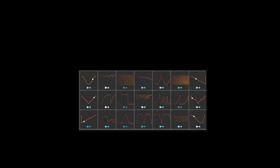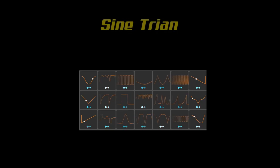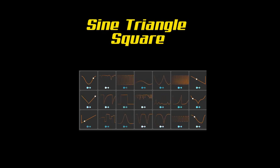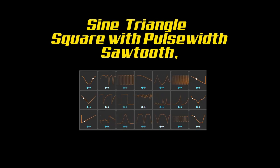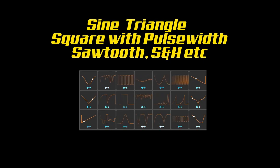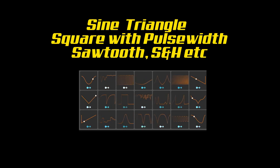As an oscillator or envelope, various basic waveforms can be defined or selected, such as sine, triangle, sawtooth, square with different pulse width, sample and hold, and many more — up to very exotic waveforms.